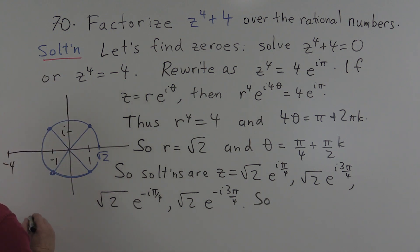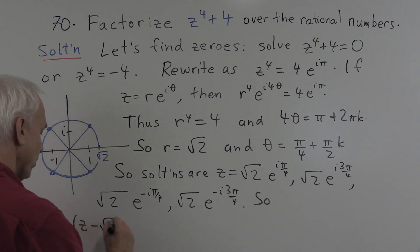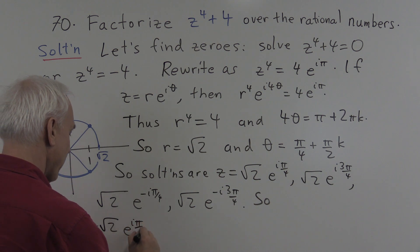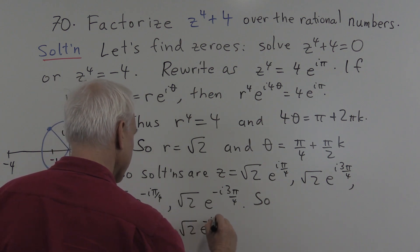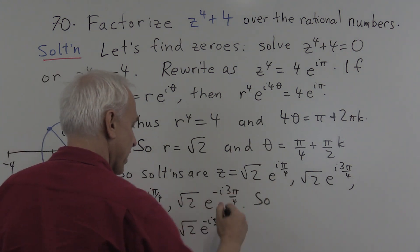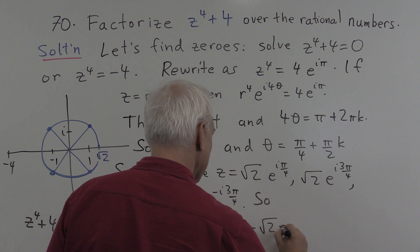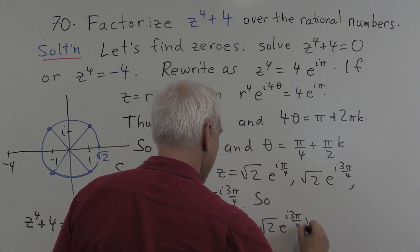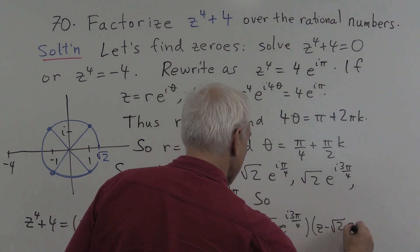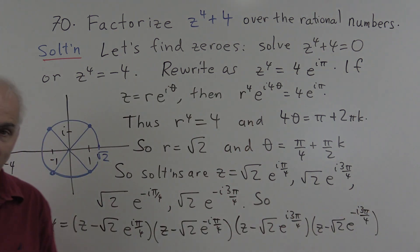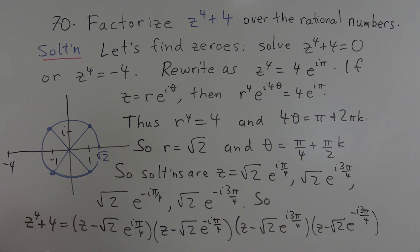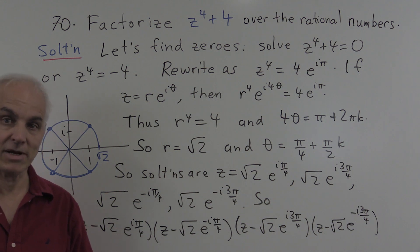So we get the factorization that z to the fourth plus 4 equals z minus root 2 e to the i pi by 4, and then I'm going to put this one here which is the complex conjugate right beside it, z minus root 2 e to the minus i pi by 4. And then I'm going to put these two together, z minus square root of 2 e to the i 3 pi by 4, and z minus root 2 e to the minus i 3 pi on 4. That's a complex factorization of this polynomial. It's not yet a rational factorization, but it's a complex factorization.